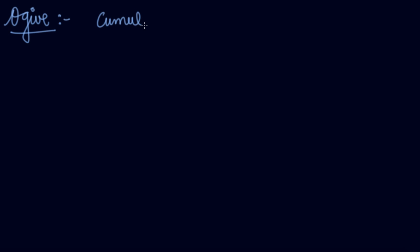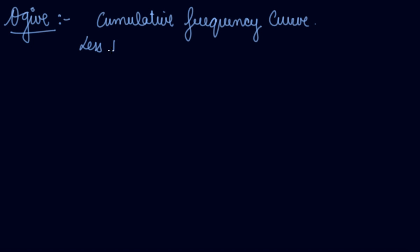In this video we will be studying the Ogives — how you present your data on the Ogives. Ogive is also a part of diagrammatic presentation of your data. Your Ogives are the cumulative frequency curve. In this, you will plot your cumulative frequencies rather than your frequencies. And your Ogive is of two types: less than Ogive and more than Ogive.